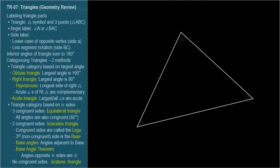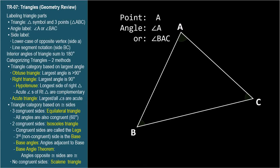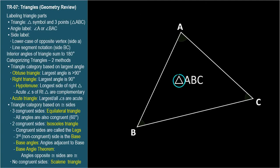This is a quick review of triangles and triangle vocabulary typically covered in a geometry course. Triangles are usually labeled with uppercase letters denoting the vertices. We refer to the point as point A and to the angle as the angle at A, as discussed in TR-01. The triangle itself is referenced with the triangle symbol followed by the labels of its three vertices: triangle ABC.